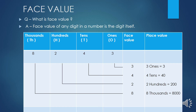Here, three ones is equal to three. Four tens place pe hai, to four multiply by ten — it means four tens is equal to forty. Two hundred place pe hai, to iski face value two hai. Aur two hundreds, two multiply by hundred is equal to two hundred. Eight thousand place pe hai, but face value as it is rehti hai. Aur place value eight multiply by thousand is equal to eight thousand.